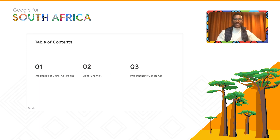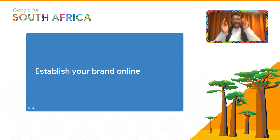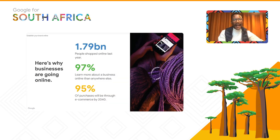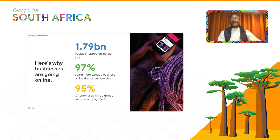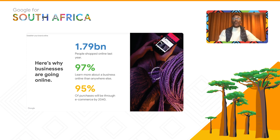Today we're going to cover three things: the importance of digital advertising, digital channels, and an introduction to Google Ads. Here's why businesses are going online today: around 1.79 billion people shopped online last year, 97% learn more about a business online than anywhere else, and 95% of purchases will be through e-commerce by 2040.